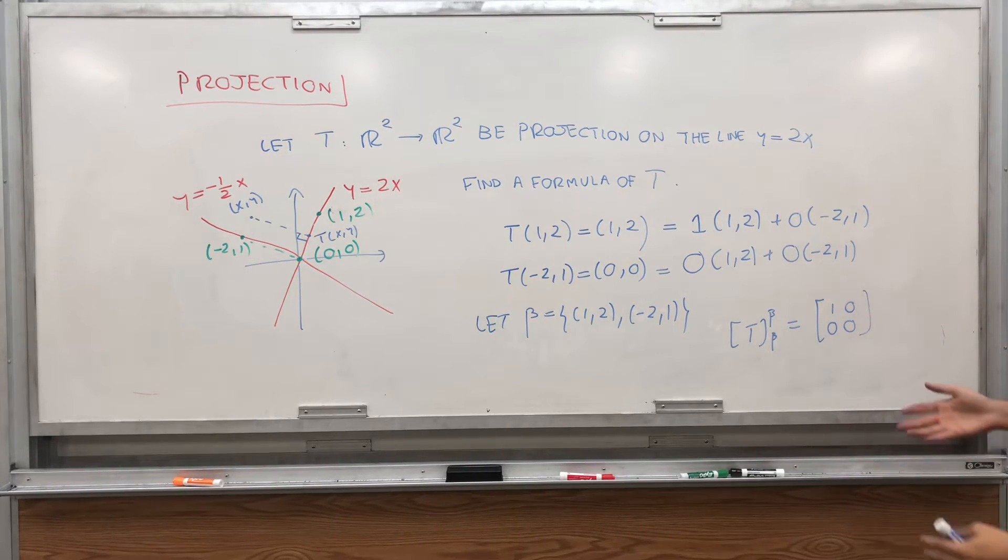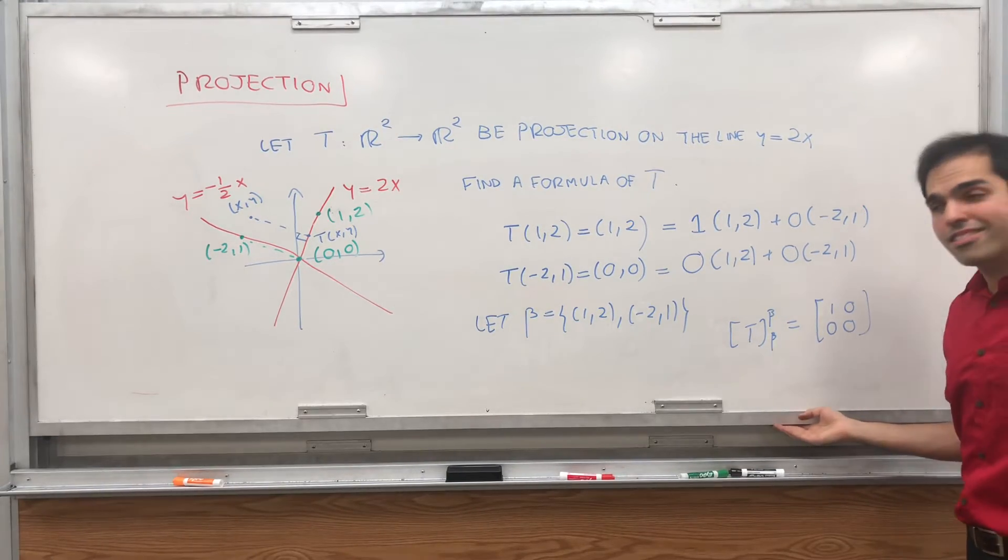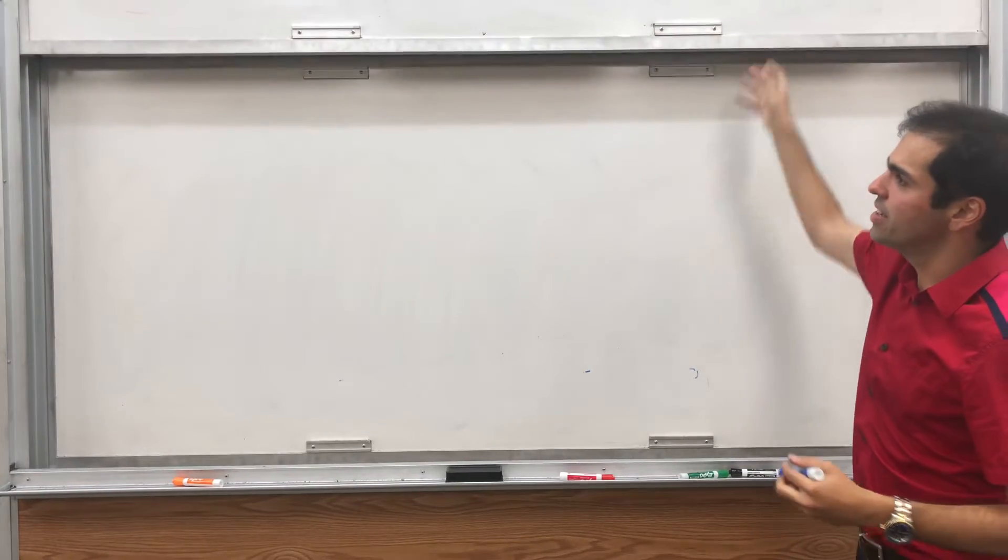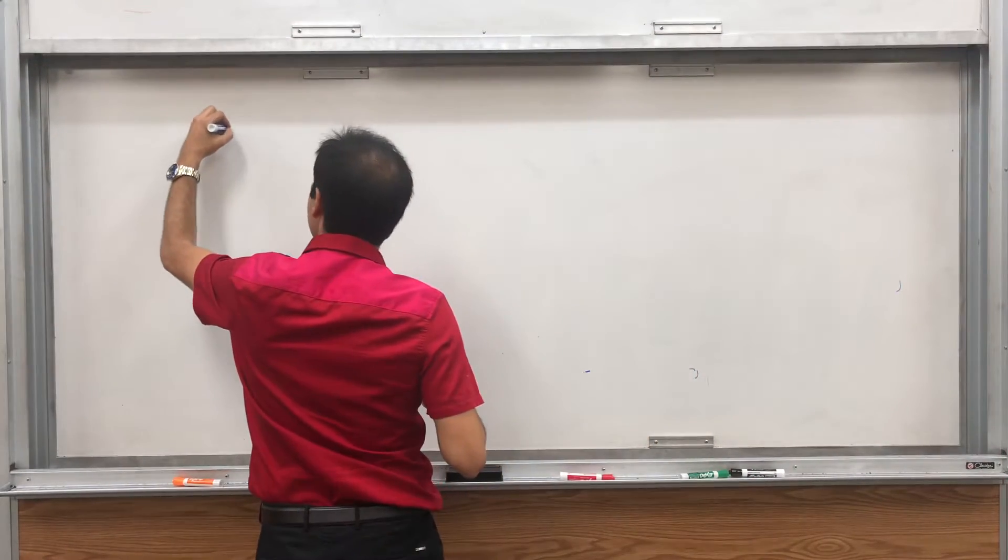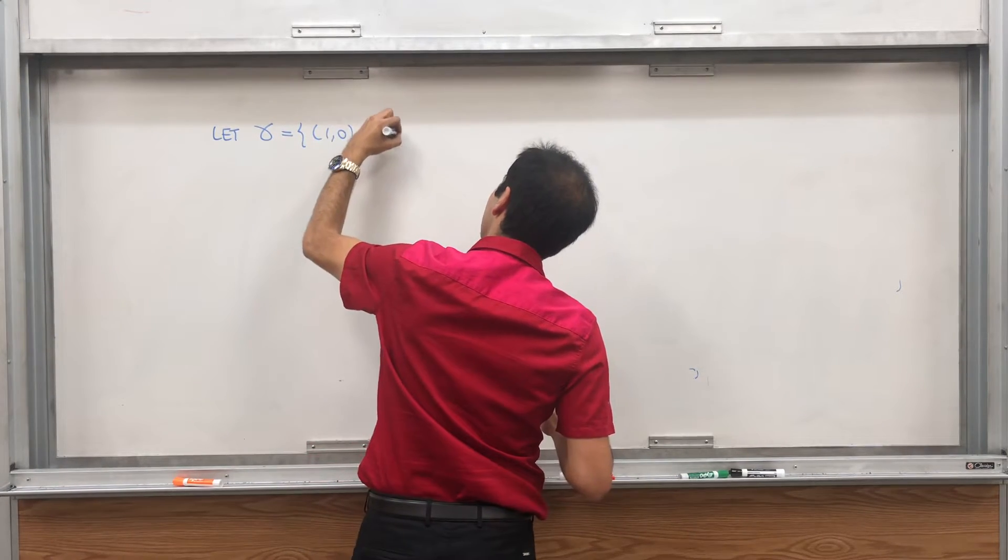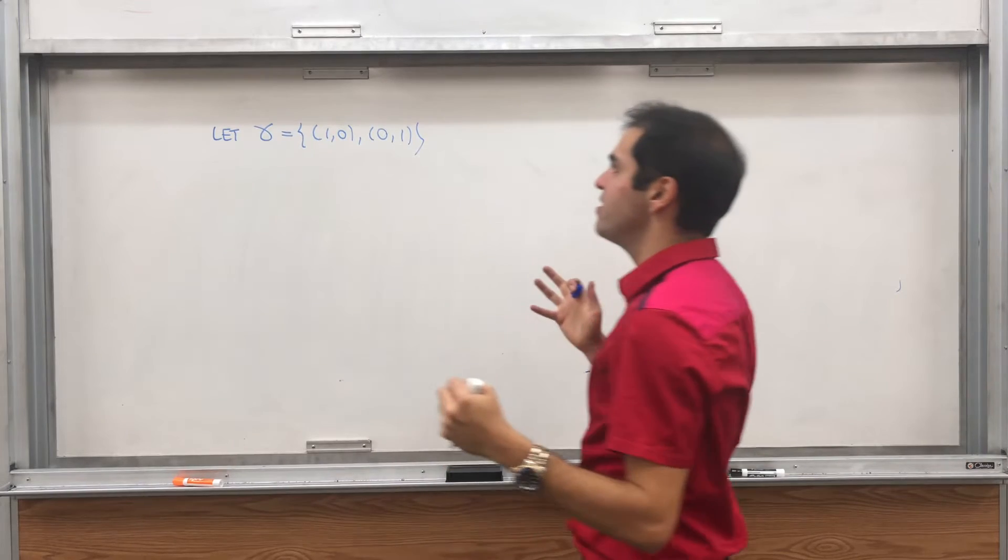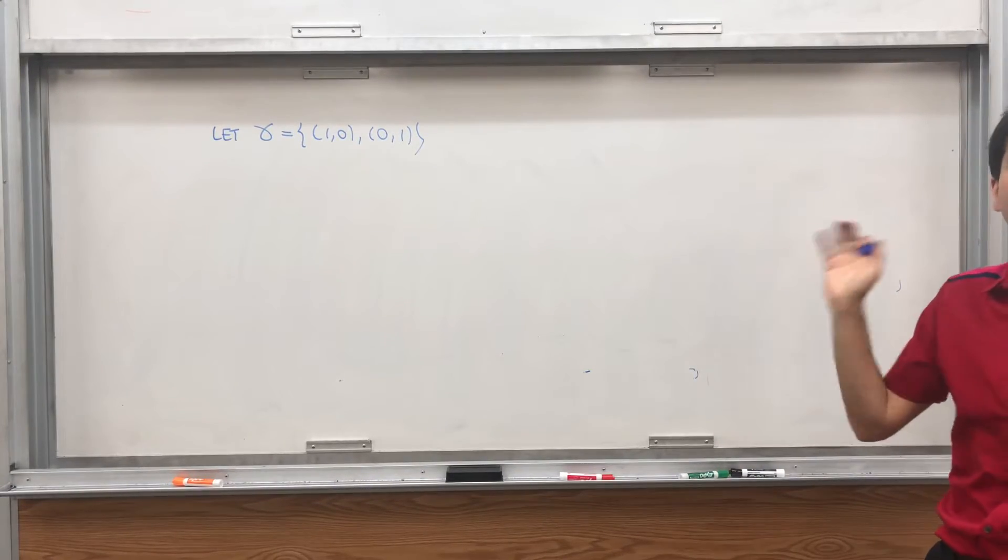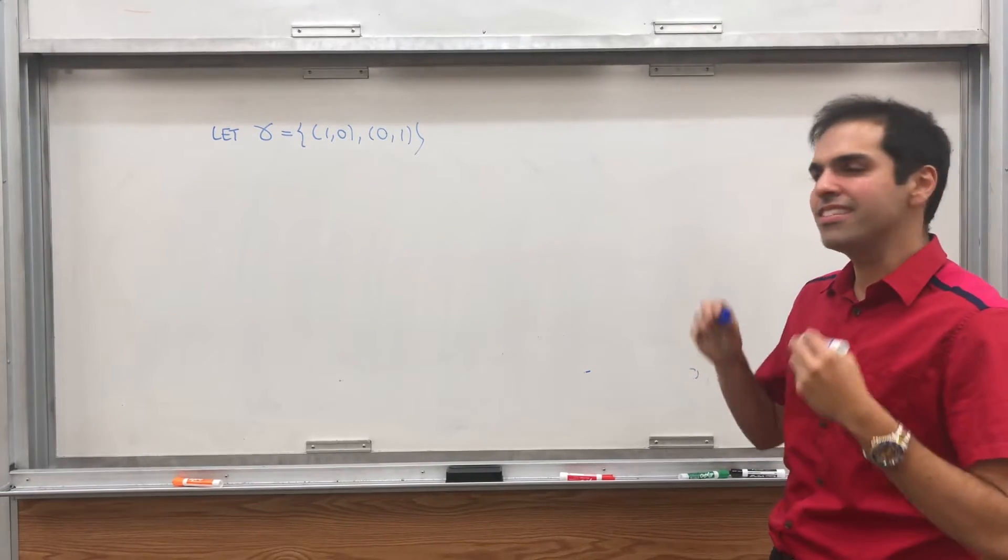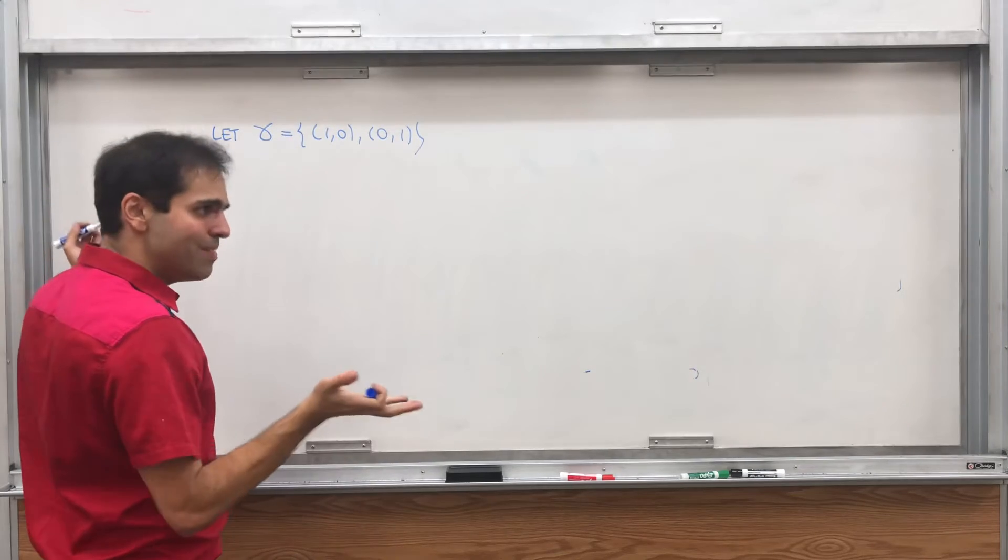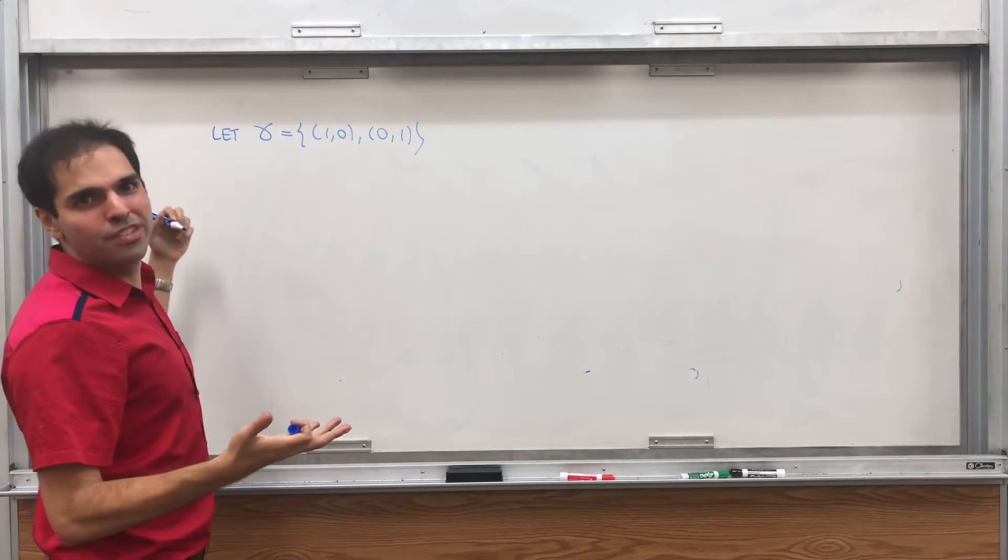Very good. And now, we just need to find, remember, first of all, let gamma be the new basis, which here is the standard basis. So let gamma equals 1, 0, and 0, 1, because it turns out once we know the matrix of T with respect to the standard basis, we know what T is.